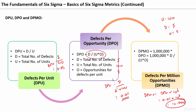Once you have the value of DPMO, you would remember there was a table relating the sigma level and the DPMO. So 10,000 DPMO can be equated to a sigma level — it will be somewhere around 2.3 or 2.4. Once you calculate the DPMO in this way, you will be able to calculate the sigma level.